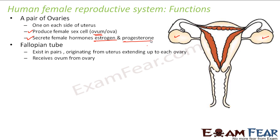Next is the fallopian tube, also known as the oviduct. It exists in pairs and originates from the uterus, extending up to each ovary. The purpose of the fallopian tube is to receive the ovum from the ovary. The terminal part of the fallopian tube is funnel-shaped with finger-like projections. These projections push the ovum into the fallopian tube when the ovum is released from the ovary.